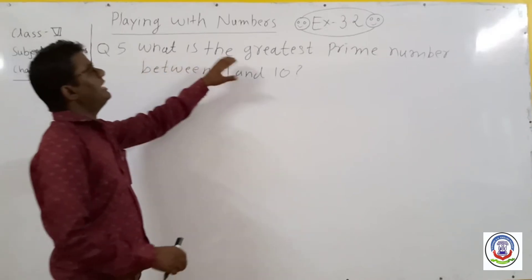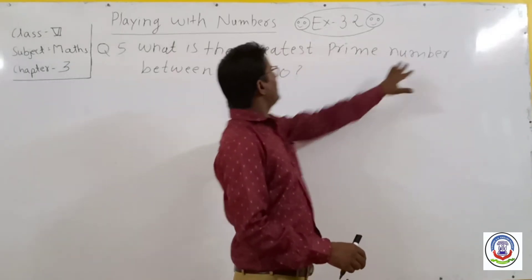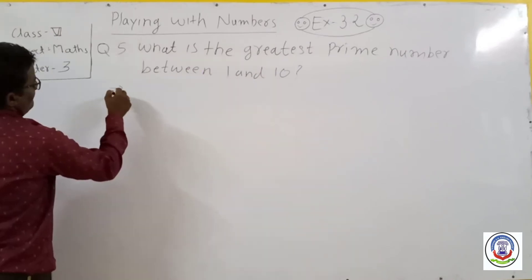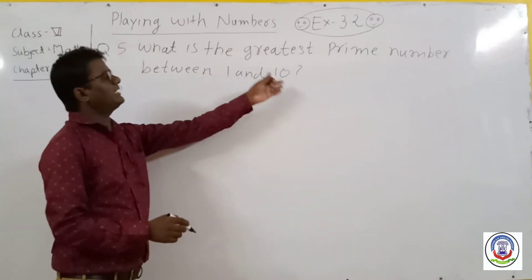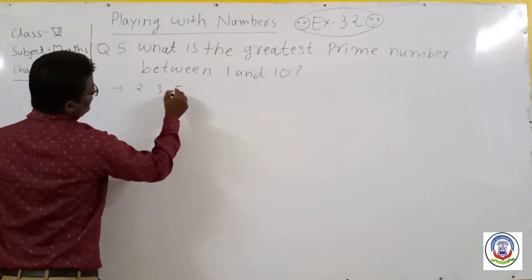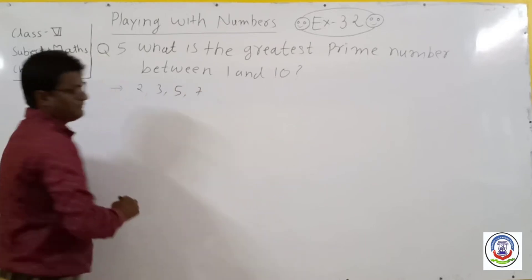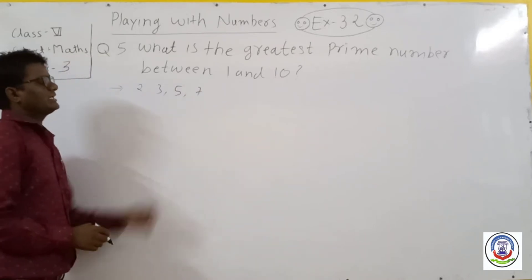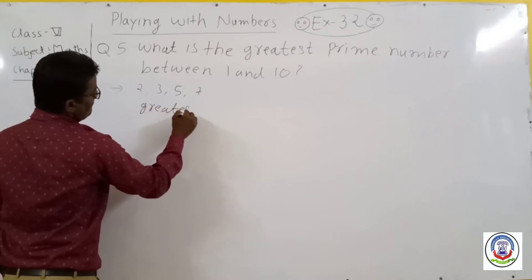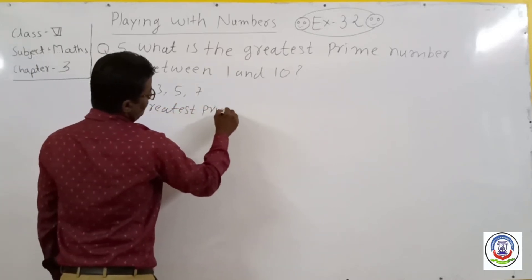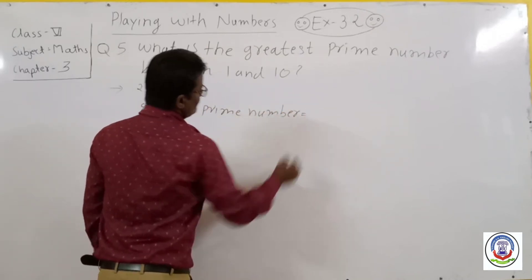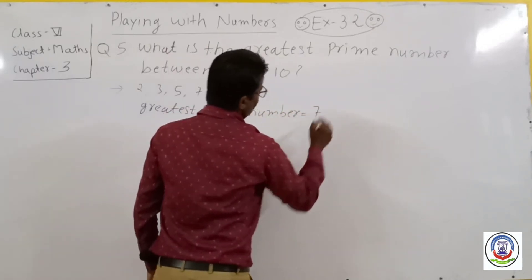Question 5: What is the greatest prime number between 1 and 10? The prime numbers between 1 and 10 are: 2, 3, 5, and 7. Among these, the greatest prime number is 7. So 7 is our answer.